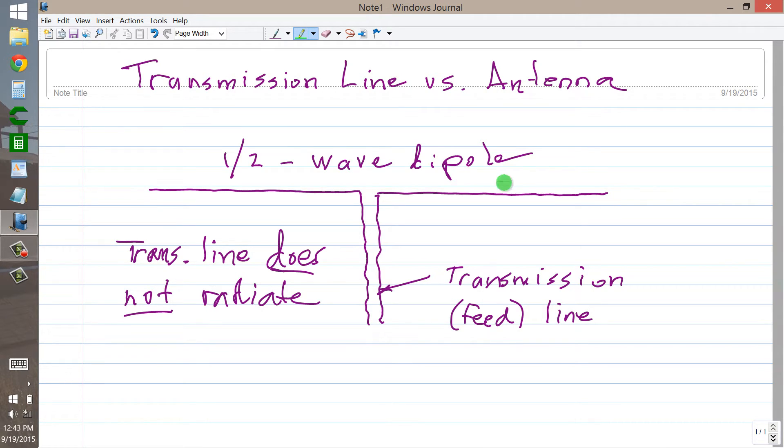Now what I am showing here is a half wave dipole fed with what looks like open wire transmission line. And of course this goes to your radio or transmatch as the case may be. It could be open wire line, it could be coaxial line, it is a generic feed line.